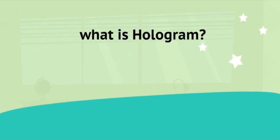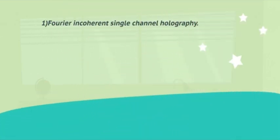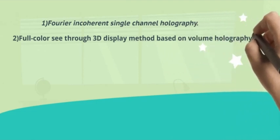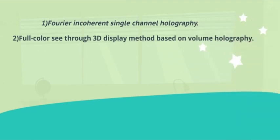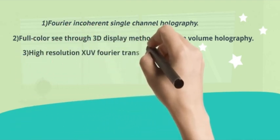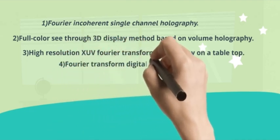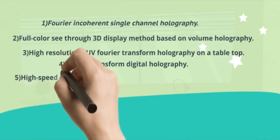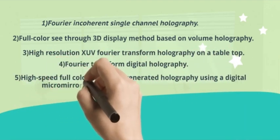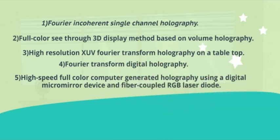I'll mention some of them in brief. The first method is the Fourier incoherent single-channel holography. The second is the full-color see-through three-dimensional display method based on volume holography. The third is the high-resolution XUV Fourier transform holography on a tabletop. The fourth is the Fourier transform digital holography. And the fifth is the high-speed, full-color, computer-generated holography using a digital micromirror device and fiber-coupled RGB laser light. That sounded a little bit overwhelming.